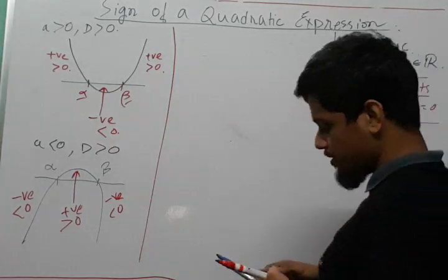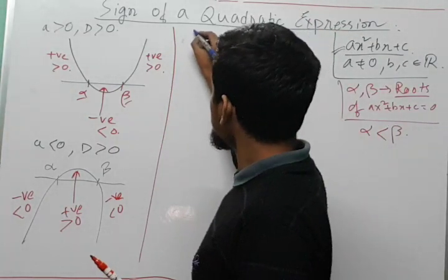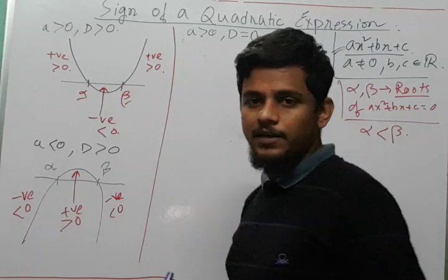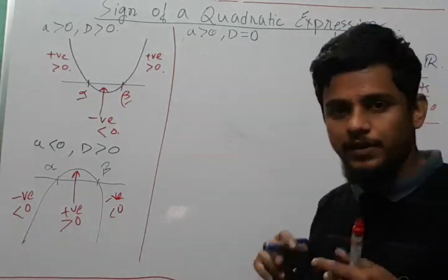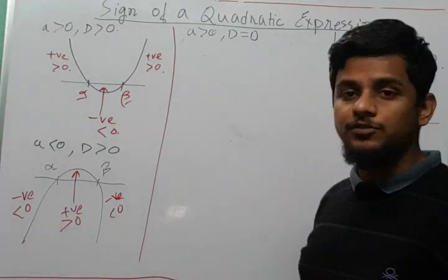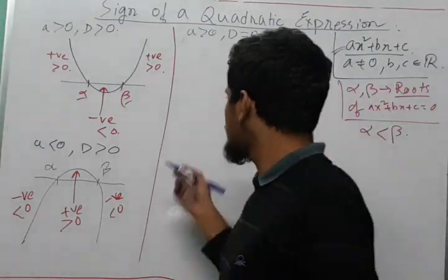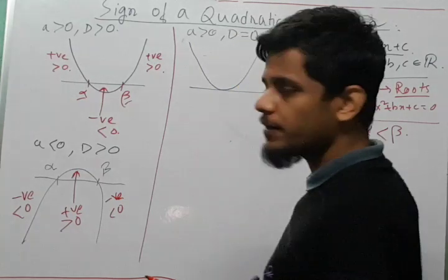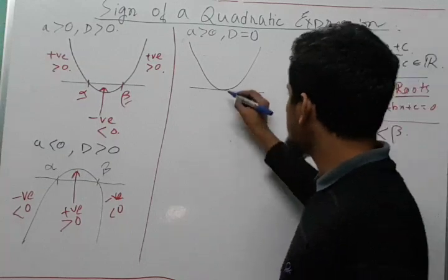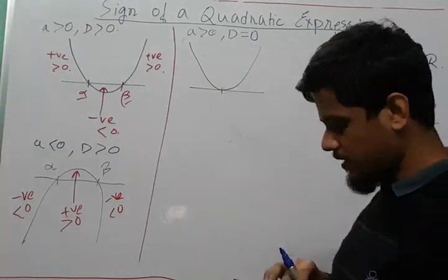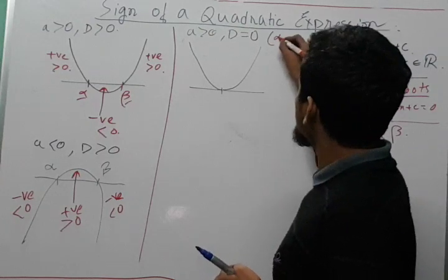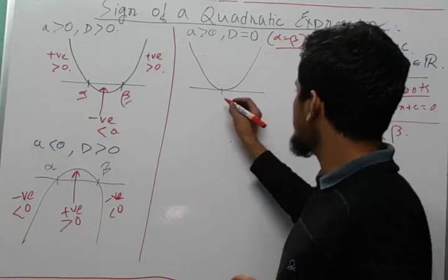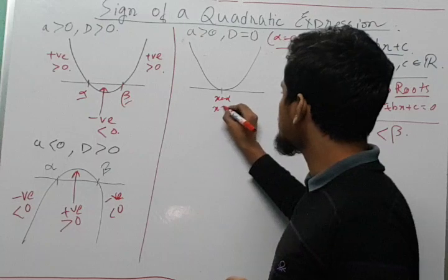Now we move to the next condition: what happens when a is greater than 0 and D is equal to 0. Since a is greater than 0, the parabola is opening upwards, and D equal to 0 means it is touching the x-axis. So the graph will look somewhat like this — if this is the x-axis, this will be the graph of ax² + bx + c. Since D is equal to 0, alpha is equal to beta, meaning the roots are equal. We can take this touching point as x equal to alpha, or equivalently x equal to beta.